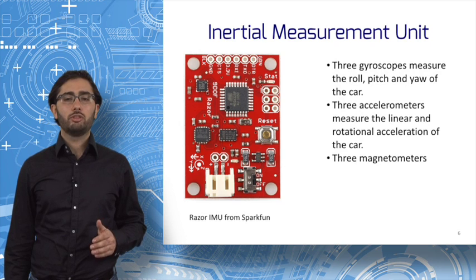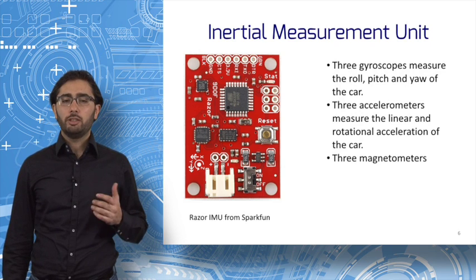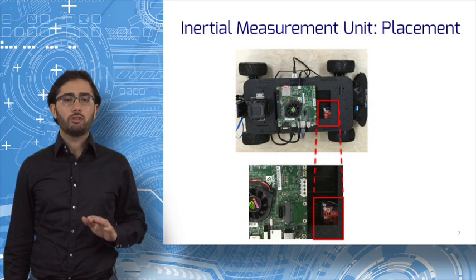Finally, three magnetometers are used to validate the readings of the gyroscopes and accelerometers. We use, in this course, the Razer IMU from Sparkfun. It fits in the palm of your hand as you saw. You can see where the IMU is placed on our cars.